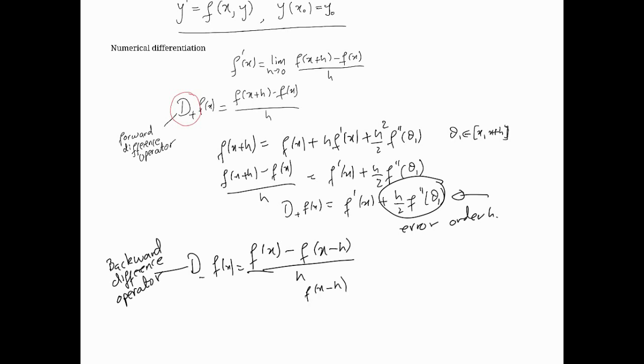In a similar way, we can do a similar error analysis to get an idea of how accurate this backward difference approximation is. If we do the Taylor series again, we get f'(x) here. The negative sign is the main difference—nothing else is different. This will be f''(θ₂), where θ₂ belongs to between x-h and x.